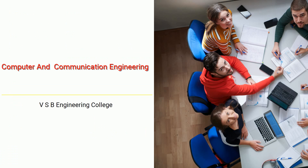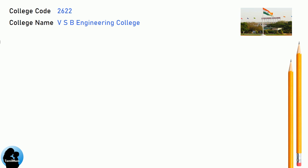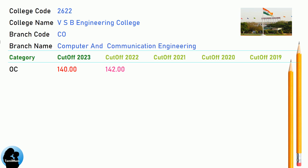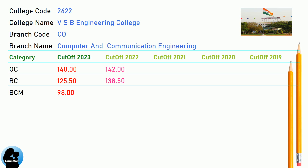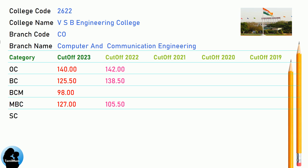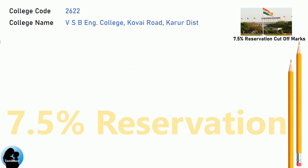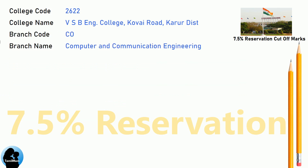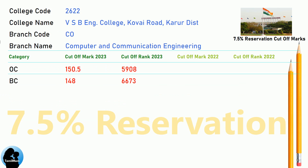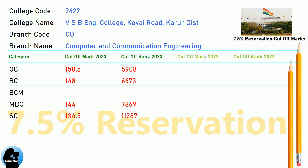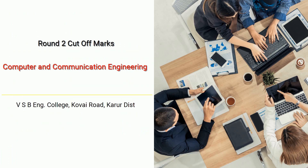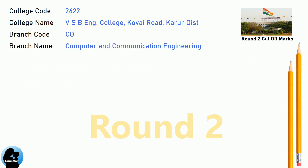DNA Cut-Off for VSB Engineering College in Computer and Communication Engineering. DNA 7.5 Reservation Cut-Off for VSB Engineering College in Computer and Communication Engineering. DNA Round 2 Cut-Off for VSB Engineering College in Computer and Communication Engineering.